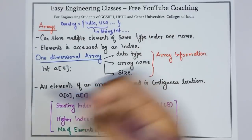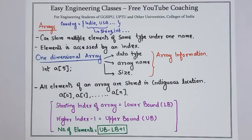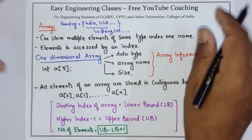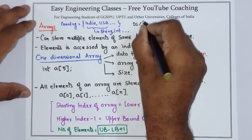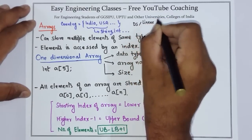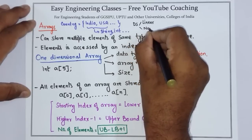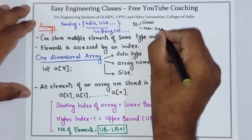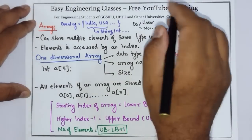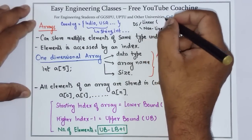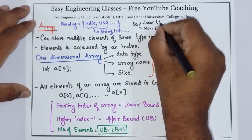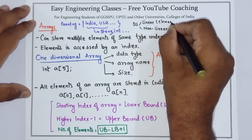But what is an array, or what kind of data structure does an array represent? When we study data structures, we say data structures are of two types: one is linear data structure and another is non-linear. Linear data structures are those in which the elements form a sequence.